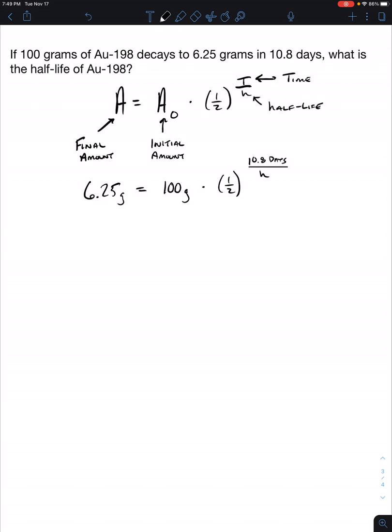So this one's a little different because we're solving for a variable that's in an exponent. So we'll cross that bridge when we get there, but that's the reason why I wanted to make sure we had a video dedicated to this. So our first step is to combine like terms, which we can combine the 100 grams and the 6.25.